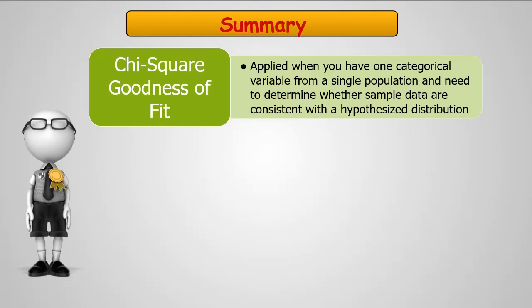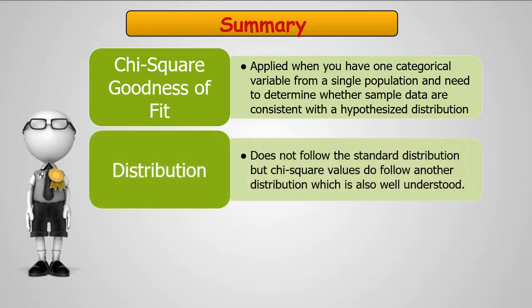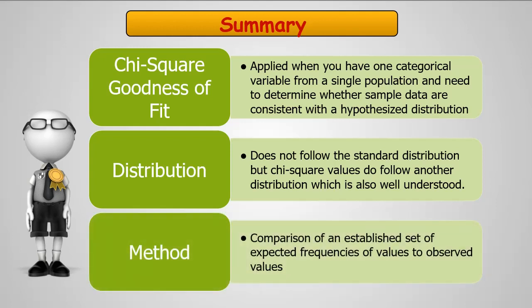Chi-square goodness of fit is applied when you have a categorical variable with a single population and need to determine whether the sample data are consistent with the hypothesized distribution. The distribution does not follow the standard normal distribution. It looks much more like the F distribution which is still well understood. The method of comparison of an established set of expected frequencies to those of the observed frequencies is the method that we use to execute a chi-square test.